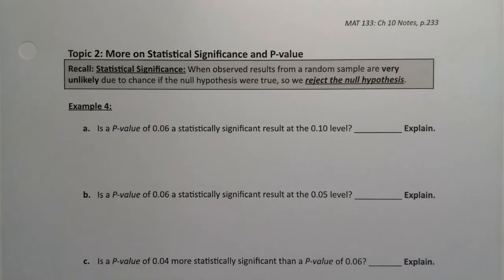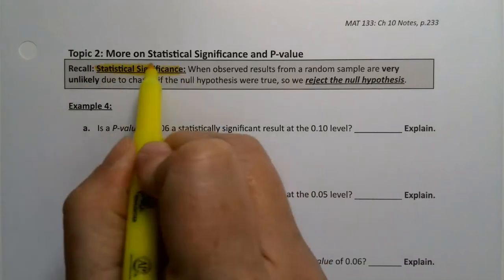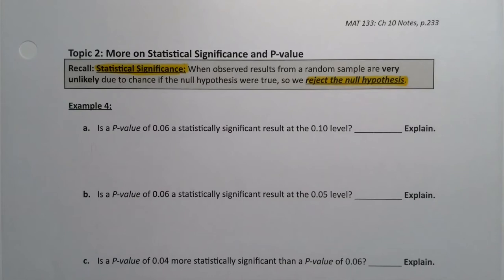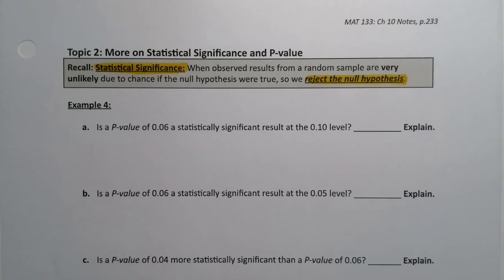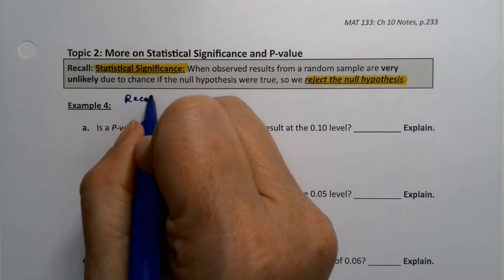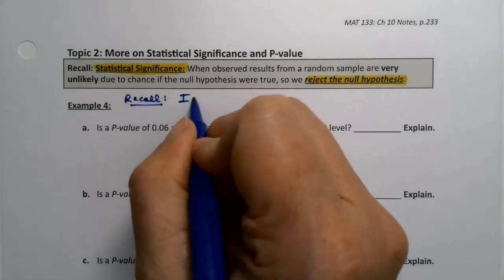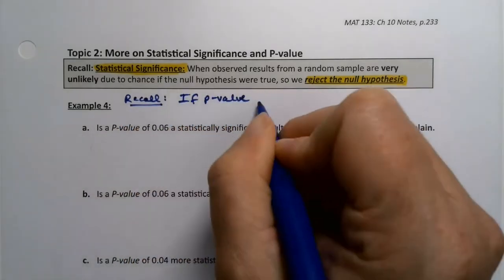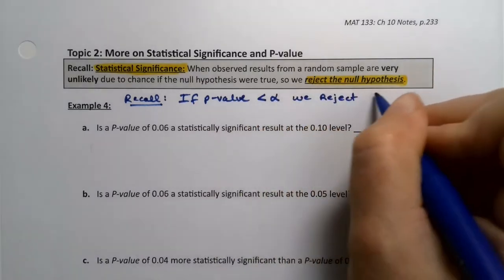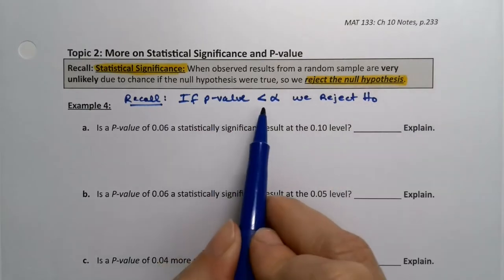Let's explore a little bit more about statistical significance and p-value in these next couple of examples. Remember that statistical significance means getting to reject the null hypothesis. Your goal is to reject the null hypothesis — that is statistical significance. That means you want a low p-value, because if your p-value is low, then you get to reject H-naught. You certainly want it to be lower than alpha.